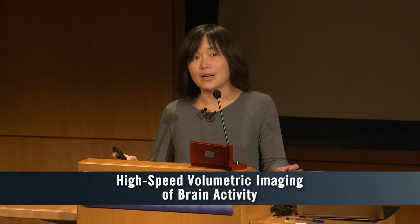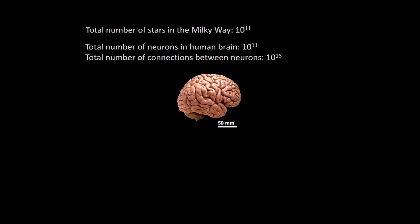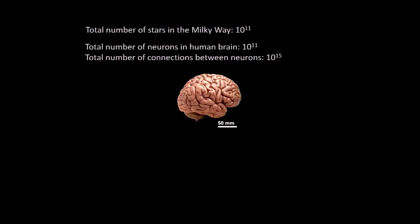It is very difficult to understand the brain. Part of the reason is the sheer number of neurons we have to study. There are about 100 billion stars in our galaxy, and the human brain has about the same number of neurons — also about 100 billion. What makes it even more difficult is that, on average, each neuron is connected with about 10,000 other neurons.